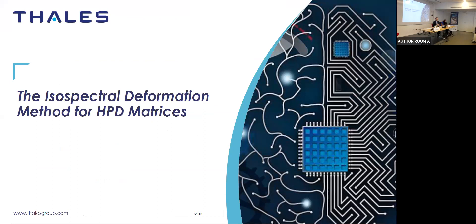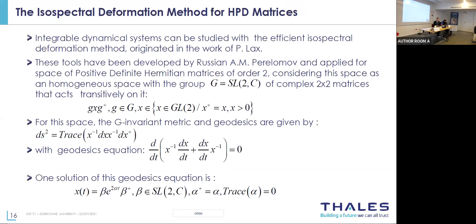This is the first link between information geometry and integrable systems, and there is no coincidence in the close connection between the two. Another work, by people working on complex integrable systems, is the isospectral deformation method for HPD (Hermitian positive definite) matrices, which are very useful in information geometry. Integrable systems can be studied with the isospectral deformation method originated by Lax, also developed by Perelomov, applied for the space of positive definite matrices of order two considered as a homogeneous space with group SL(2,C).